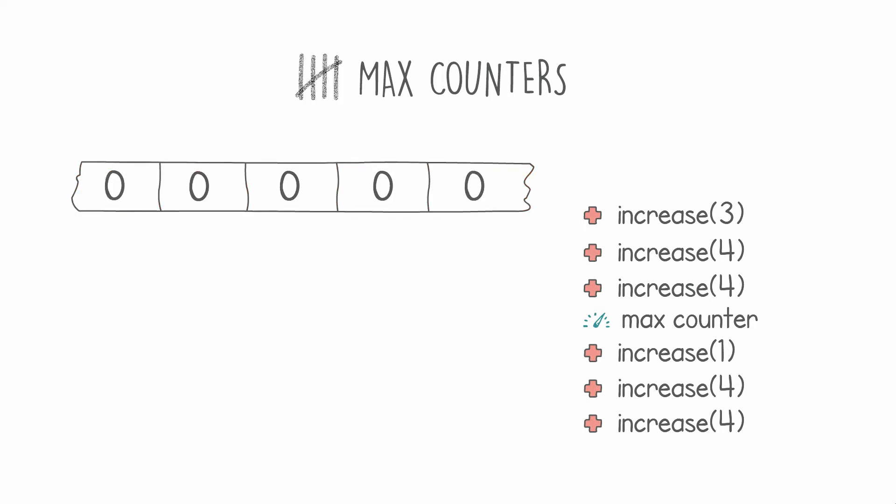The problem has two inputs: one is the number of counters (in this example it was 5), and the other is a set of instructions. This set of instructions is represented in a second parameter.